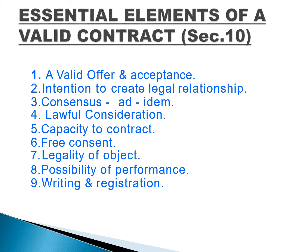Capacity to contract — both parties must be legally capable; for instance, minors are not allowed to enter into a contract. Free consent means both parties have freely agreed to the contract — consent must not be given out of fear or coercion. Legality of object — the object of the contract must be legal. Possibility of performance — the contract must be one that can actually be performed; if it cannot be performed, it is not a valid contract. Finally, it should be in writing and properly registered.